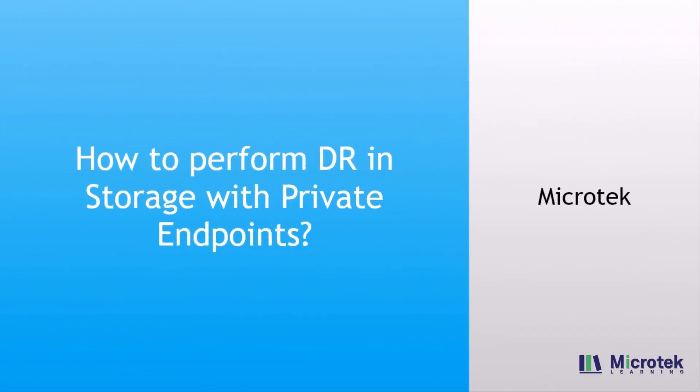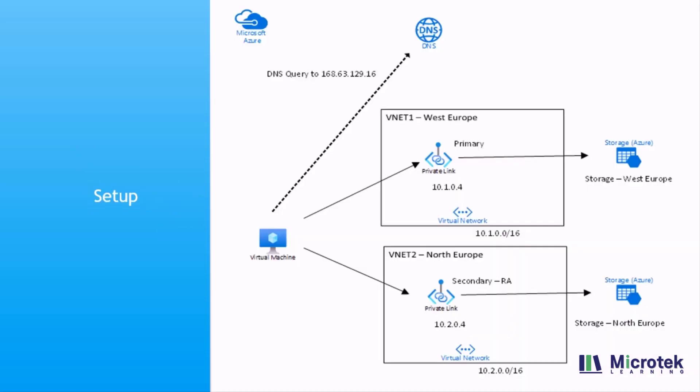Hi, this is Vijay from Microtech. In this video I'm going to show you how to perform disaster recovery in a storage account using private endpoints. Disaster recovery in a storage account is a feature which helps you fail over from one region to another region. It comes with two types: one is GRS, which is geo-redundant storage, and another one is RA-GRS, read access geo-redundant storage.